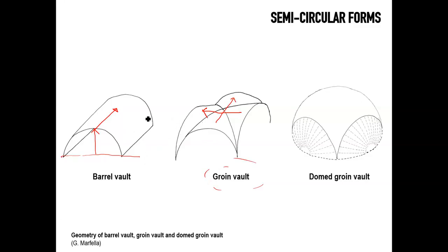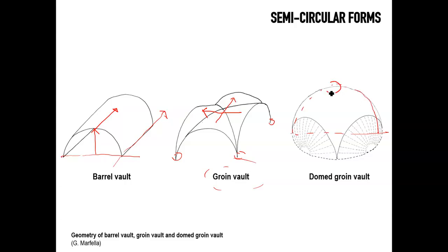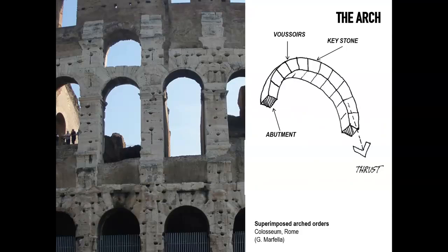The groin vault, unlike the barrel vault, has the advantage of discharging its loads only at four points rather than along the length of the vault. This method can be taken further by building a dome based on a semicircular profile. By revolving this profile 360 degrees, it is possible to obtain a perfectly semi-spherical surface that can be used as a dome. The arch, of course, is something that characterizes Roman architecture.